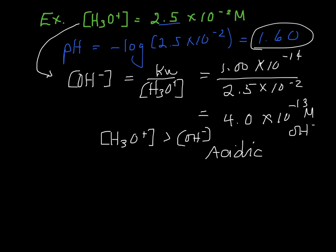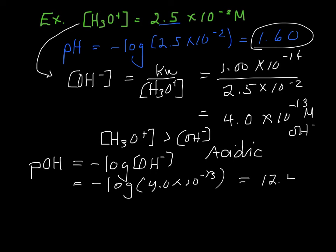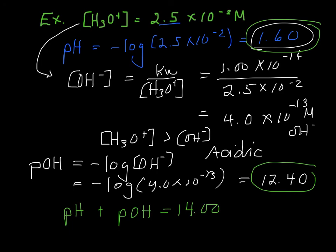And we can also find something else. We're going to find something called the pOH. If pH is minus the log of the concentration of H+, pOH is minus the log of the concentration of OH-. So minus the log of that number we just found, 4 times 10 to the minus 13. And your pOH is 12.40. Now you may notice, probably not right away, but anytime you take the pH and add it to the pOH, it always equals 14. So pH plus pOH always equals 14. So we'll practice this in class and go from there.